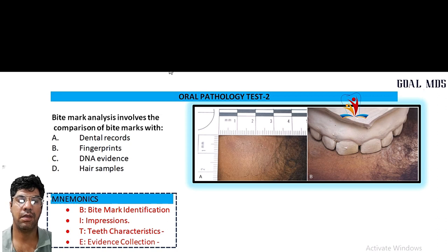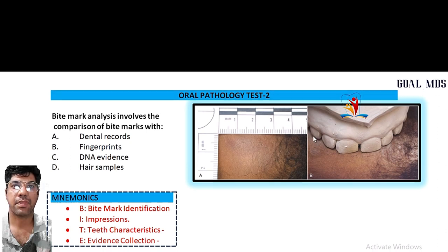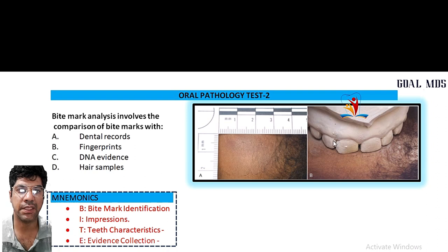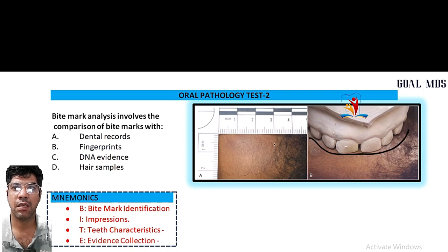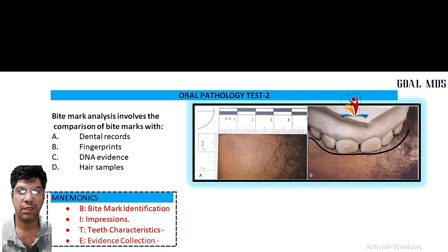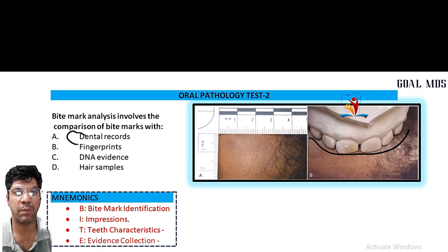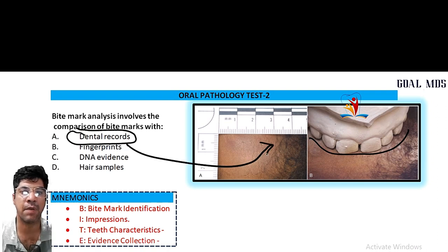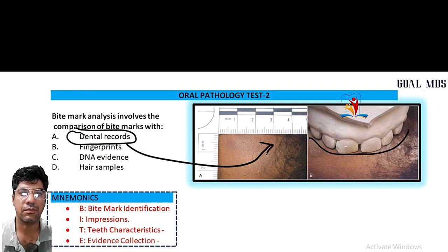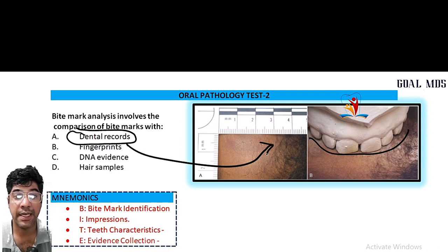Let us start with oral pathology test 2. The first question: bite mark analysis involves a comparison of bite marks. The most relevant and most common method used in bite mark analysis is dental records. The dental records, including dental impressions, X-rays, and treatment records, can provide detailed information about a person's dental characteristics.